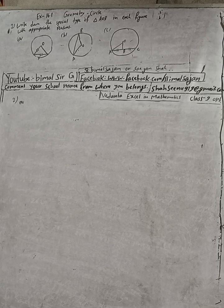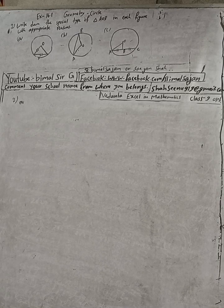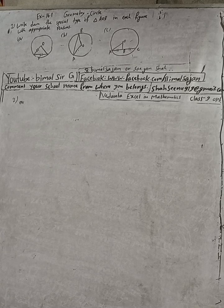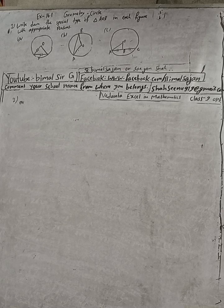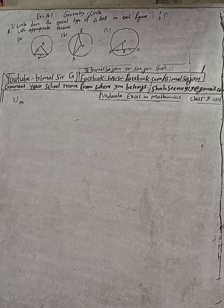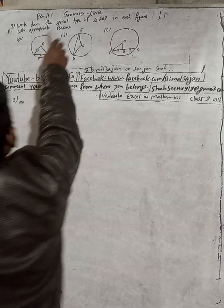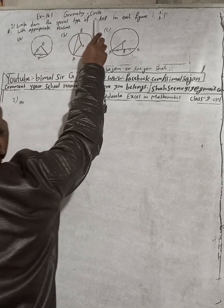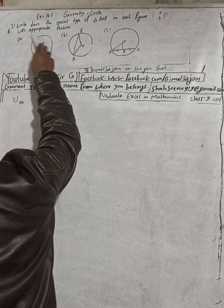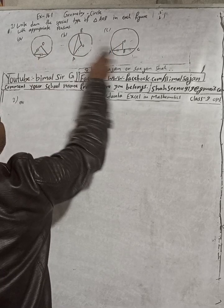Hi class 9 and 10 students, welcome back to Bimal Sarji's YouTube channel. This is question number 2, exercise 16.1, geometry, circle. Vedanth Excel in Mathematics, class 9. The question is: write down the special type of triangle AOB in each figure with appropriate reason.